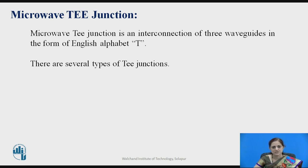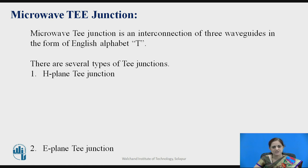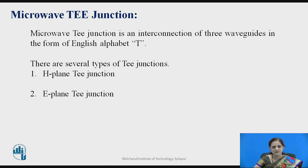What is Microwave T-Junction? A Microwave T-Junction is an interconnection of three waveguides in the form of the English alphabet T. There are several types of T-Junctions: H-Plane T-Junction, E-Plane T-Junction, and the combination of both, which is also called the Magic T-Junction.